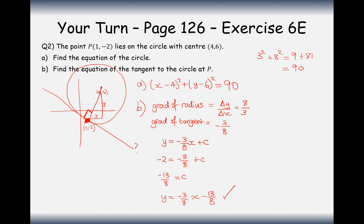We might also multiply through by 8 to get 8y, then add 3x to the other side and add 13 to the other side, giving an alternative form of the equation. Either form is absolutely correct.